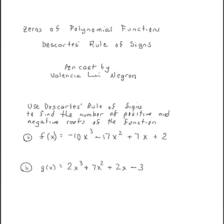We want to use Descartes' rule of signs in order to determine the number of positive roots and negative roots that this polynomial may have.